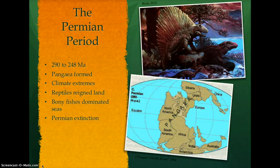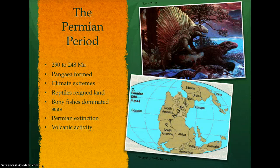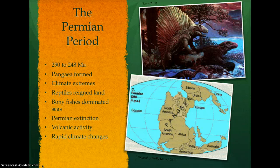Whereas the exact cause of the Permian extinction is unknown, it is believed to have been caused by the largest known volcanic eruption in Earth's history. The last eruption lasted about 1 million years, triggering rapid climate changes and releasing large amounts of carbon dioxide into the atmosphere.